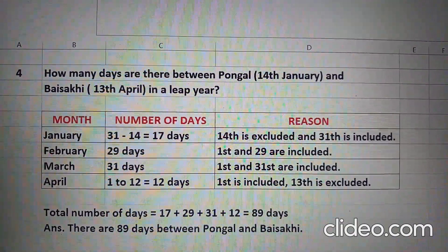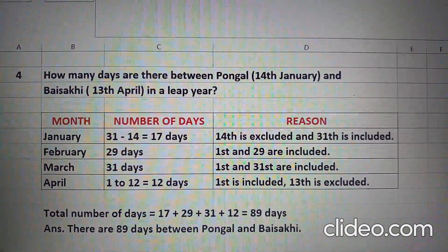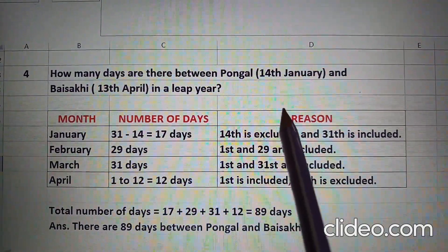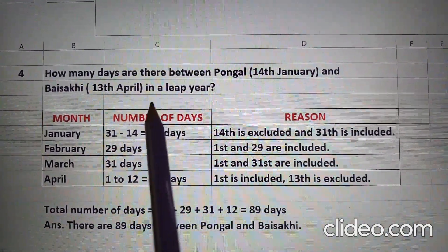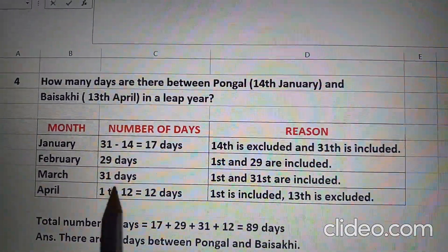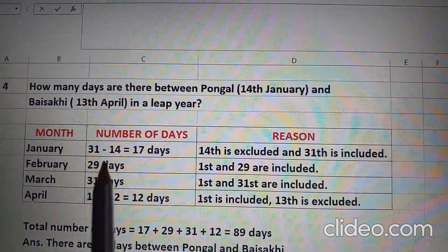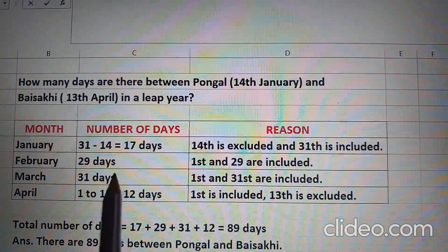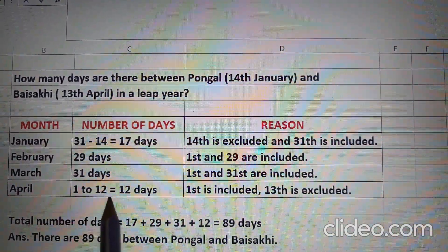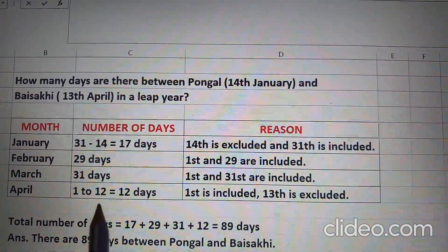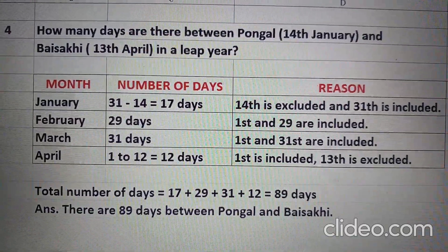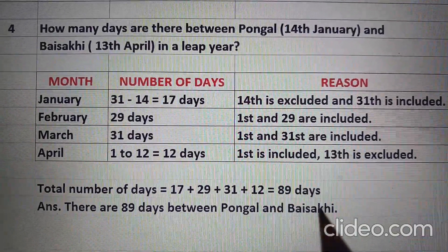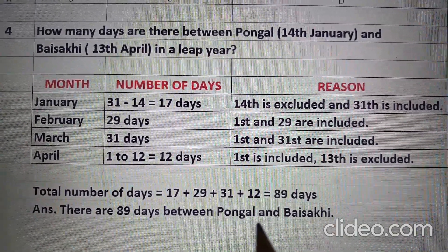Question 4: How many days are there between Pongal, 14th January, and Baisakhi, 13th April, in a leap year? Whenever you have to find out the days between, you will exclude both days — 14th ko exclude karenge, 13th ko bhi exclude karenge. January has 31 days; we exclude 14th, so 31 minus 14 that comes to 17 days. February is a leap year, so we count 29 days. March 31 days. In April, 1 to 12 because 13th we exclude, so 12 days. Total: 17 plus 29 plus 31 plus 12 that comes to 89 days. Therefore, there are 89 days between Pongal and Baisakhi.